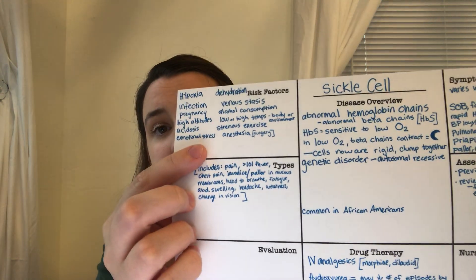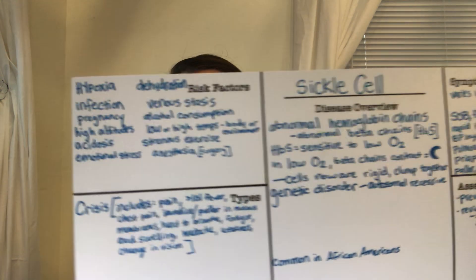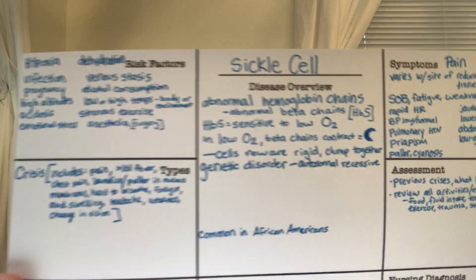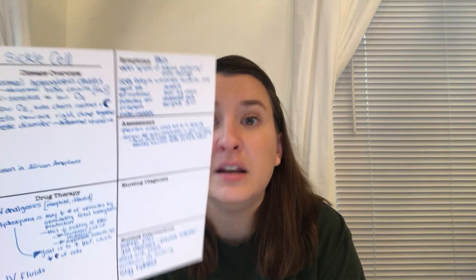Risk factors for sickle cell episodes include hypoxia, dehydration, infection, venous stasis, high altitude areas, acidosis, emotional stress, alcohol consumption, extreme body temperatures, strenuous exercise, anesthesia, and pregnancy. These are all situations that stress the body and can cause HbS hemoglobin chains to contract and sickle. Sickle cell anemia is common in African Americans.